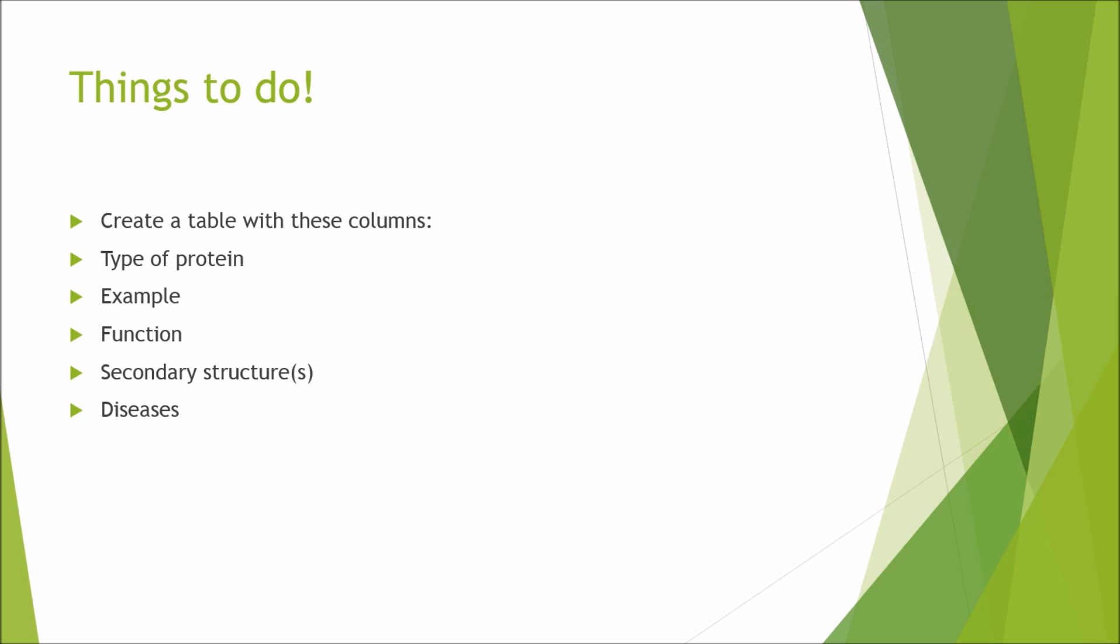We've come to the end of the presentation so just a few things that you need to do that will help you. Create a table with these columns: type of protein, example, function, secondary structures - whether they're alpha helices or beta pleated sheets - and diseases that can be caused if you've got a lack of them or without them.